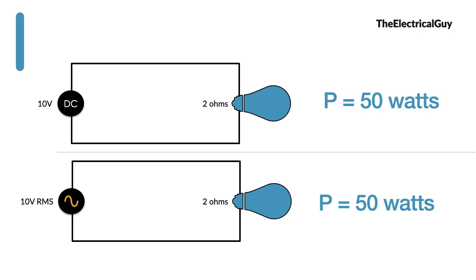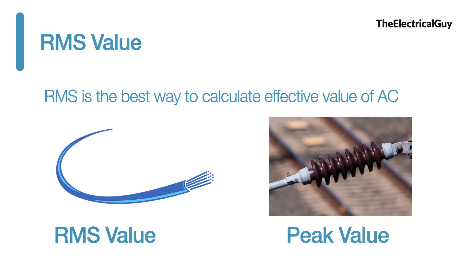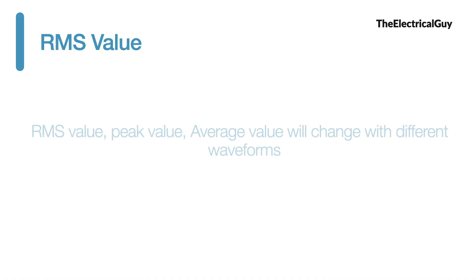RMS value is the best way to calculate the effective value of AC system. For instance for calculating size of cable considering the RMS current measurement is always helpful. But for considering insulation in high voltage AC application peak value shall be considered rather than RMS value. RMS value, peak value, average value will change with different waveforms. These values will be different for sine wave, for square wave, for triangular wave etc.